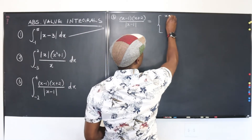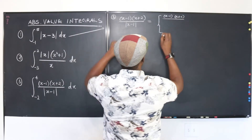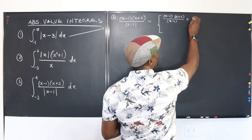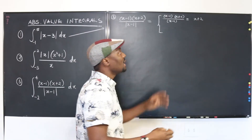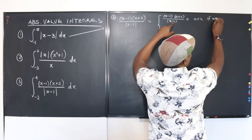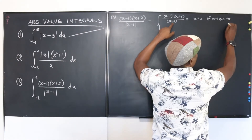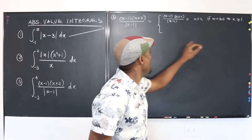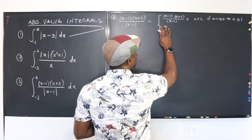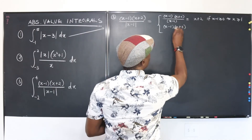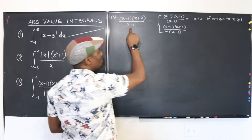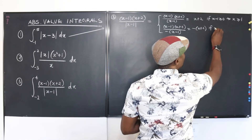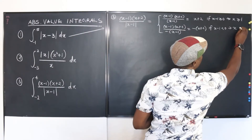For this one we do the same thing — we write it as a piecewise function. When x minus 1 is positive, we get (x minus 1)(x plus 2) divided by (x minus 1), the (x minus 1) cancels, and we're left with x plus 2. This applies when x minus 1 is greater than or equal to 0, meaning x is greater than or equal to 1. When x minus 1 is negative, we get negative (x minus 1) in the denominator, which cancels and gives negative (x plus 2). This applies when x is less than 1.